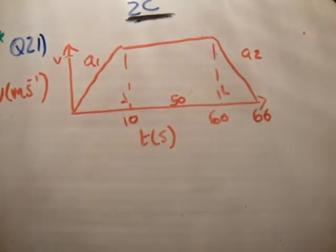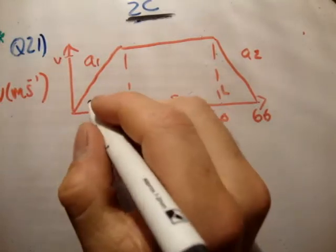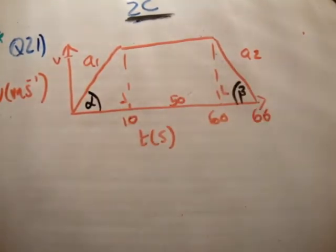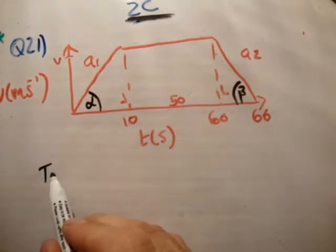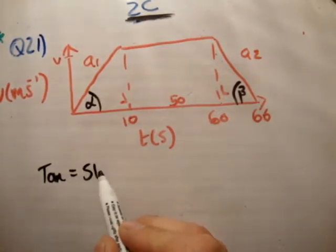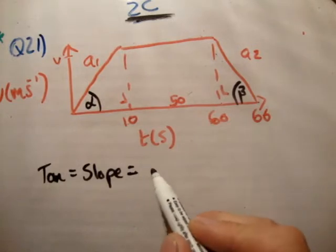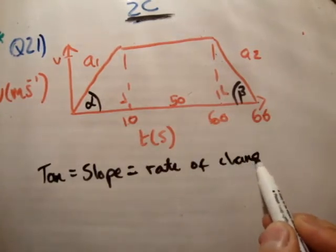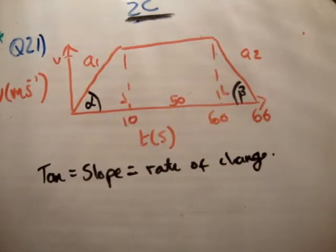Now, I'm not going to use U-vast like I usually do. In this case, I'm going to use tan. Just a quick reminder, I made two angles there. We know that tan is equal to the slope is equal to the rate of change. And in this case, we're looking at the rate of change of speed with respect to time. And what's that? Your acceleration.